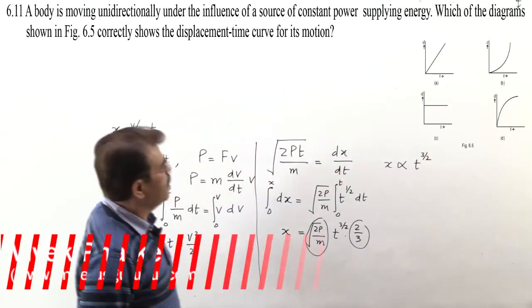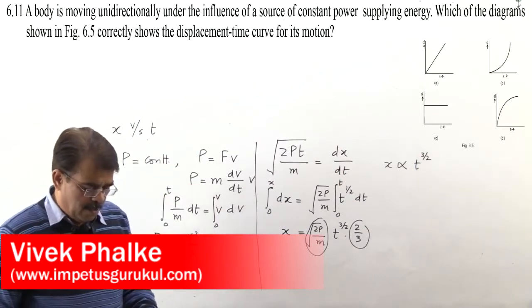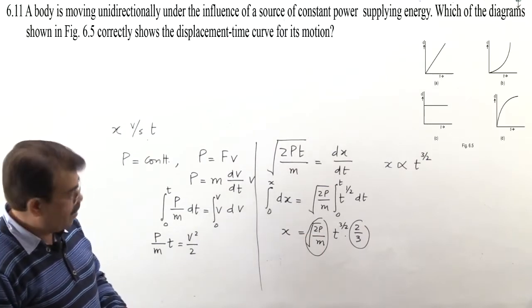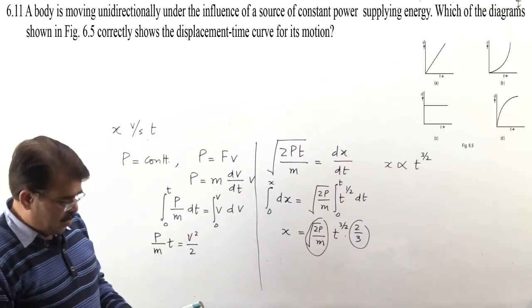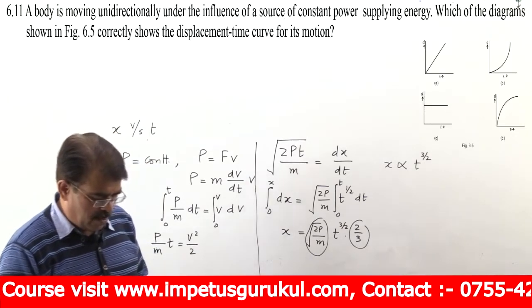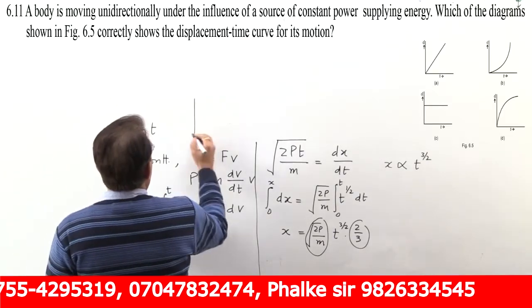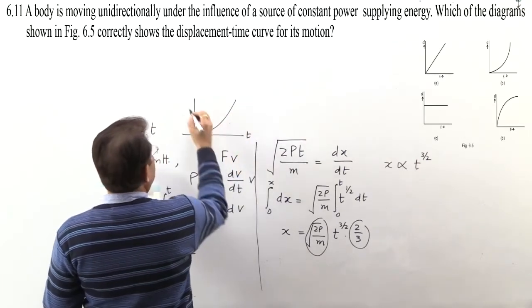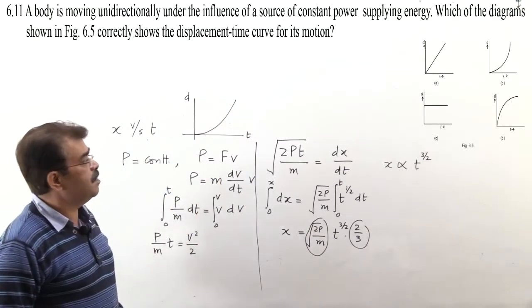This is constant, this is constant. That means we can say x is proportional to t raised to the power 3/2. That means with time, x value keeps increasing. Is it linearly increasing? No. So graph A cannot be correct. In D you can see it's decreasing. In C, d is shown constant. That means a, c, and d cannot be. So our answer is b, in which graph is shown this way. What is shown in it? That with time, displacement is increasing. So answer b is correct.